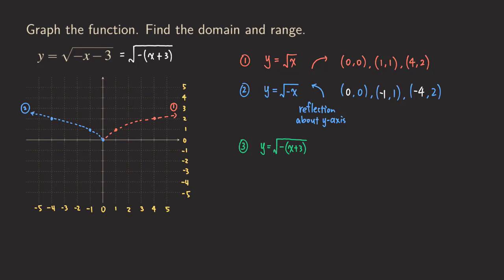Finally we get to the final graph. We are going to do the shifting — the shape doesn't really change here. We are just moving the graph. That's a horizontal shift. The plus 3 means we are going to shift to the left three units.